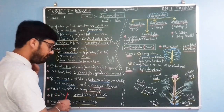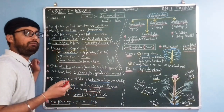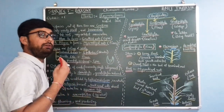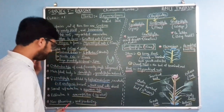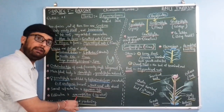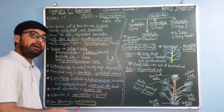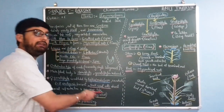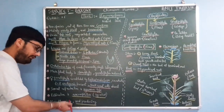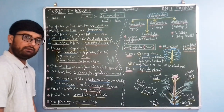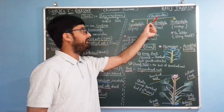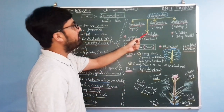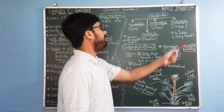Sexual reproduction is oogamous type — the female gametophyte is stationary and the male gametophyte reaches the female via wind dispersal. Therefore, pollination is anemophilous, meaning pollination is done by wind. Gymnosperms are non-flowering and seed-producing plants. They are classified into Cycadophyta, Coniferophyta, Ginkgophyta, and Gnetophyta.